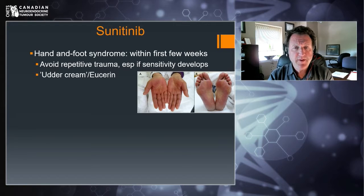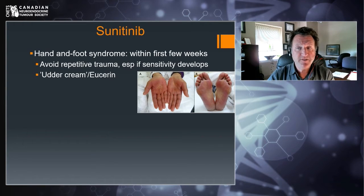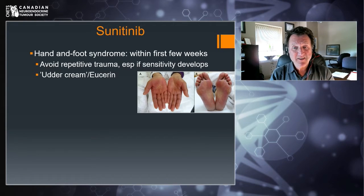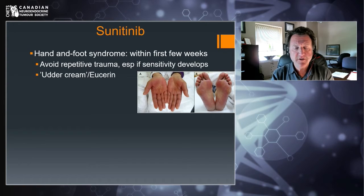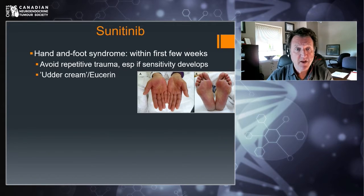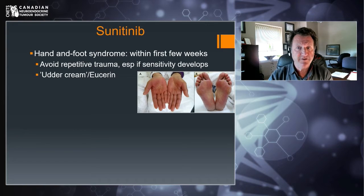Sunitinib is another pill-based therapy. One of the common side effects is hand-foot syndrome — usually within the first weeks, although it can happen months after starting treatment. I describe it to patients as getting a sunburn in the most unlikely areas: palms of the hands and soles of the feet. The skin becomes very sensitive, so if you're a walker or hiker you need to make sure your shoes fit properly and socks aren't rubbing. Great moisturizing is really important — we often recommend udder cream or Eucerin, applied generously to minimize this.